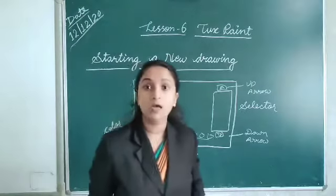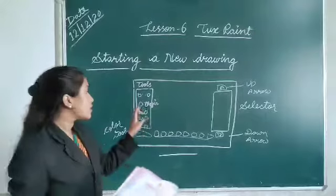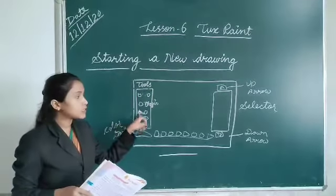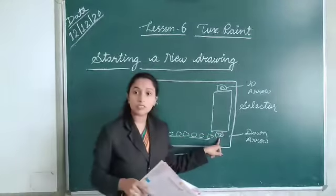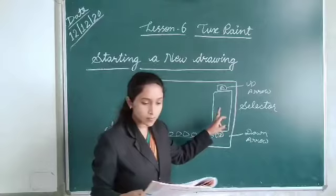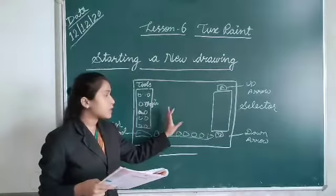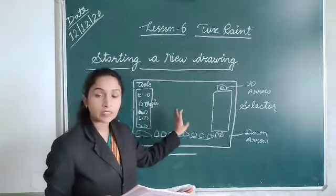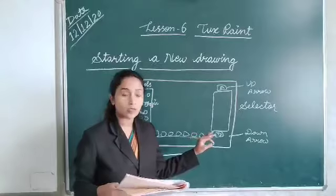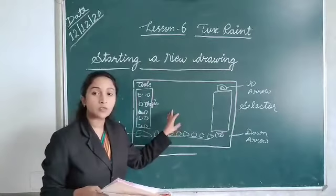So today we have learned starting a new drawing and coloring a drawing. For a new drawing, first click on the New button from the toolbar, then click on the down arrow key to get ready-made pictures. Select any picture and double click on it — the picture will appear on your Tux Paint window screen.